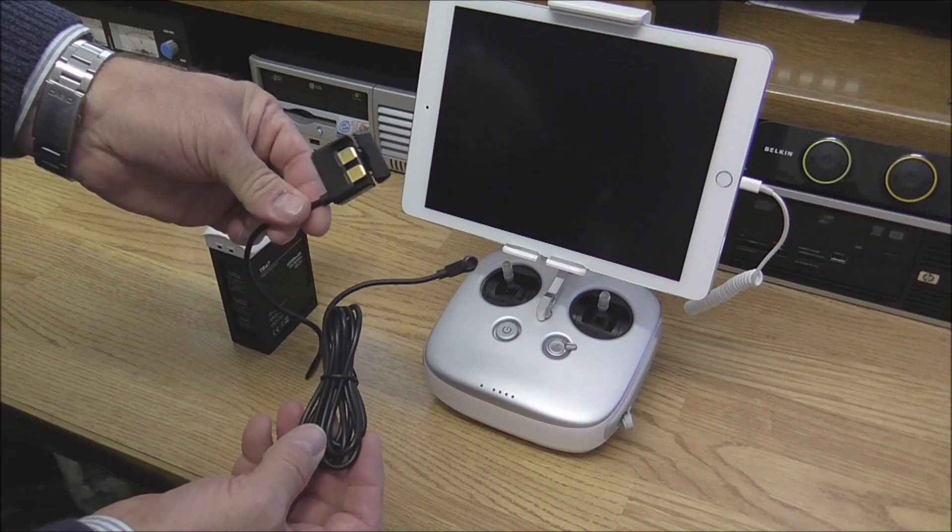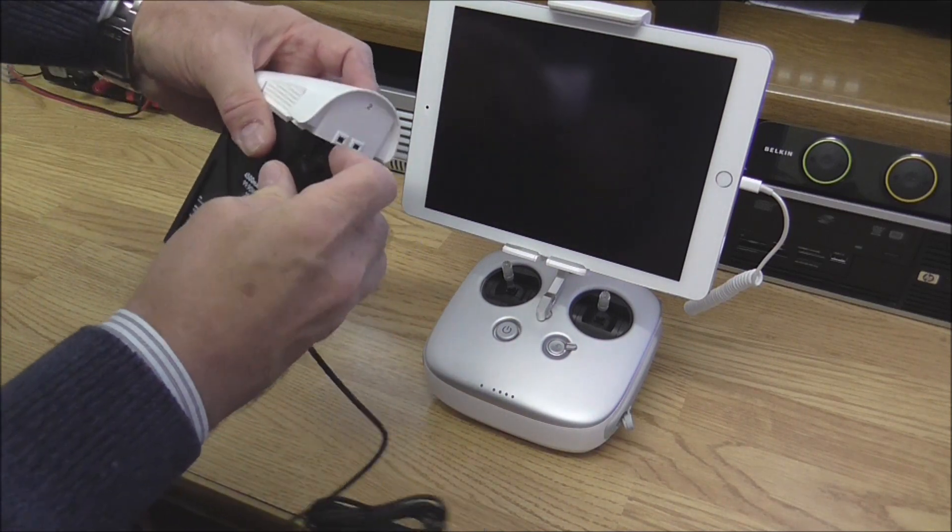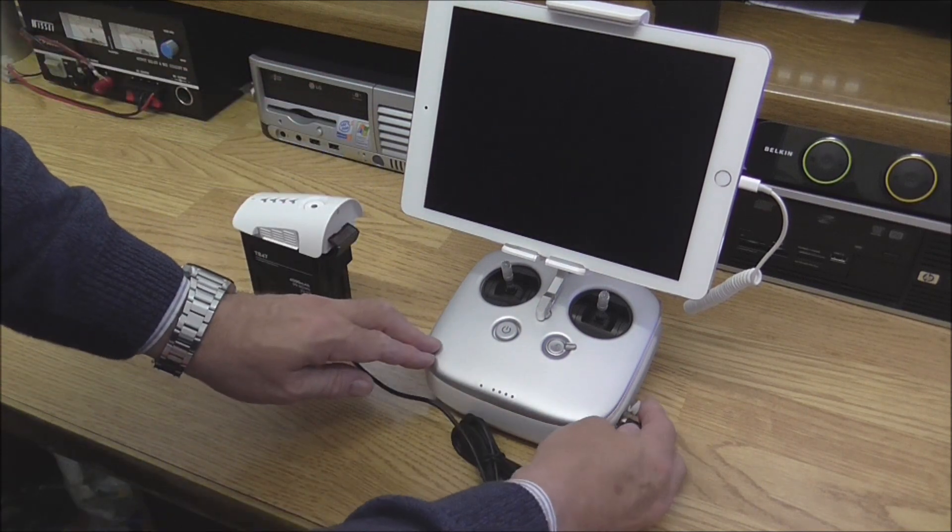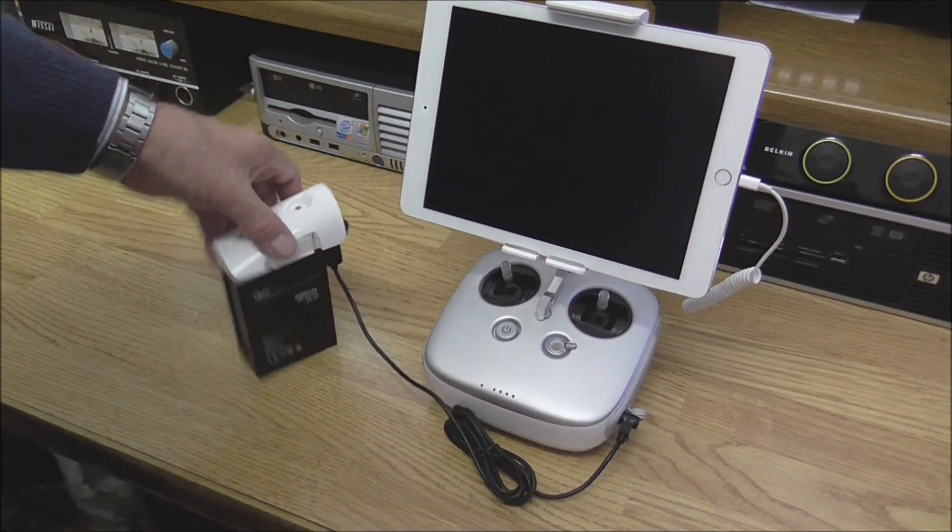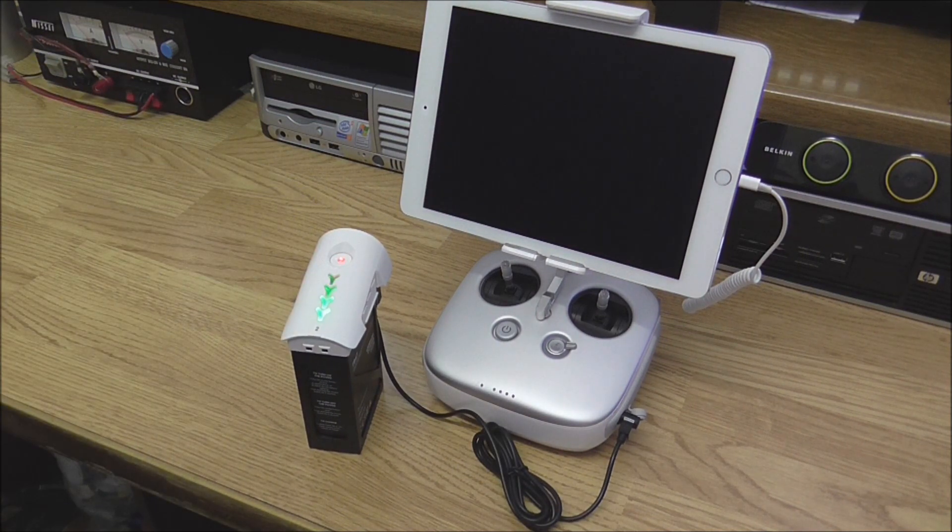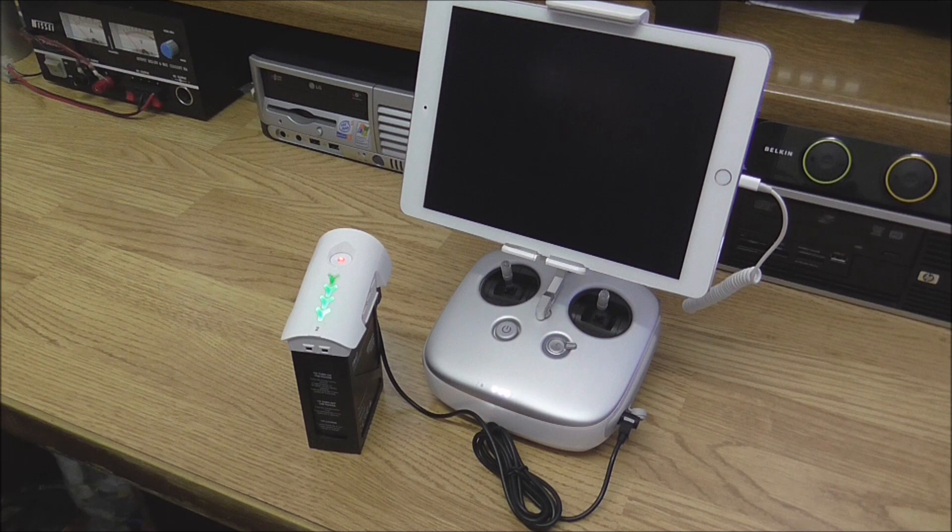When you're out in the field and away from any electrical power supply, using the lead is very simple. Simply plug it into your Inspire One battery, plug the other end into your remote control, turn on the Inspire One battery, and charging will commence on the remote control.